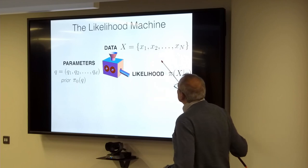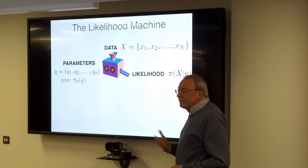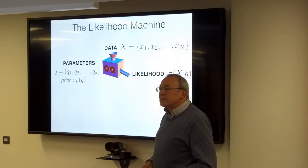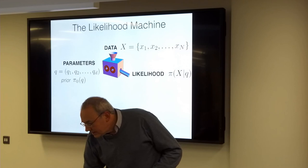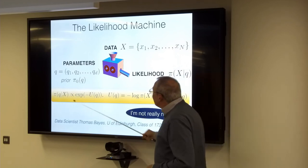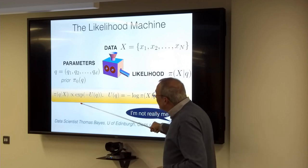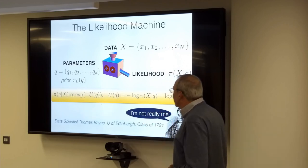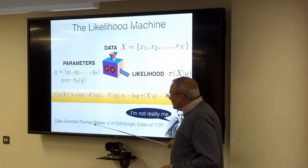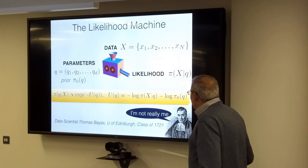If you're trying to find optimal parameters, you need to know — given certain data, what are the best parameter values? That's the opposite question. Luckily, thanks to Bayes' theorem, we can write a formula for the probability distribution of parameters given the data. I've written it in exponential form to match the Gibbs sampling concept, where U of Q is the log likelihood function. Thomas Bayes is actually a University of Edinburgh graduate from 1721 — I've seen his name signed on the student roll.